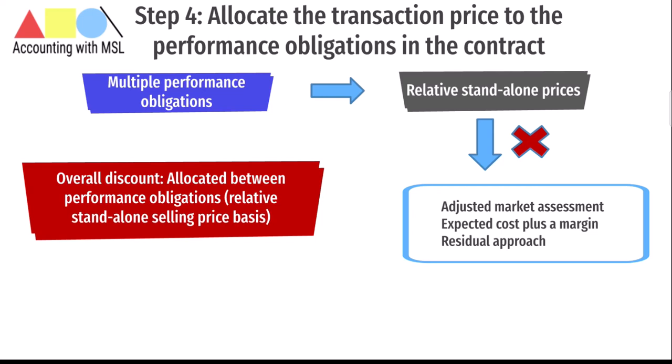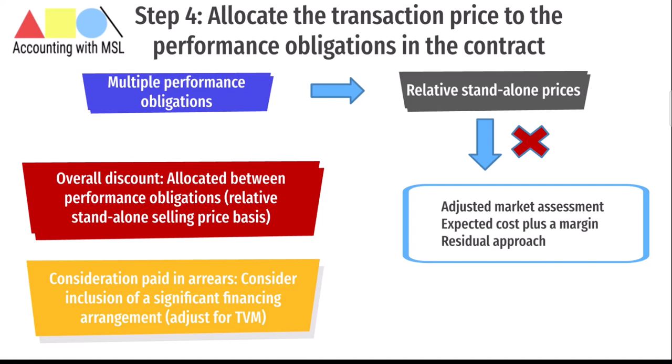In certain circumstances, it may be appropriate to allocate a discount to some but not all of the performance obligations within the contract. Also, in cases where consideration is paid in advance or in arrears, the entity will need to consider whether the contract includes a significant financing component and, if so, the need to adjust for the time value of money. A practical approach may be available where the interval between transfer of the promised goods or services and payment by the customer is expected to be less than 12 months.